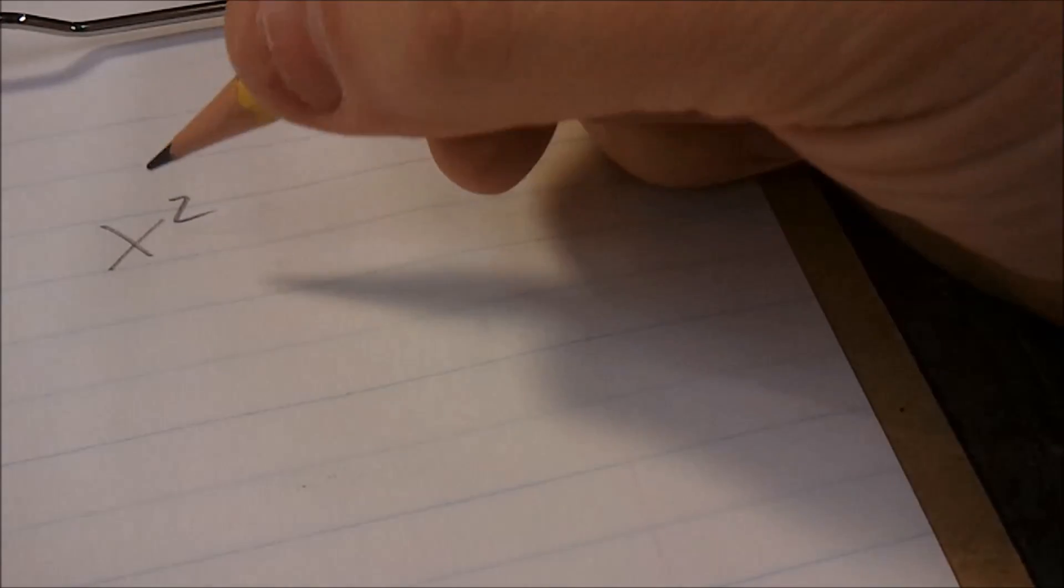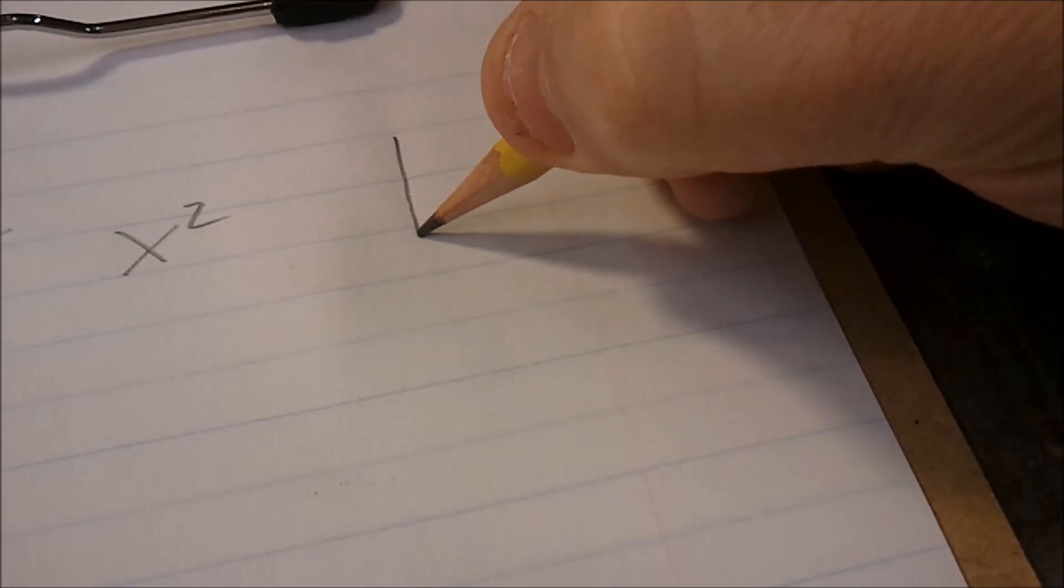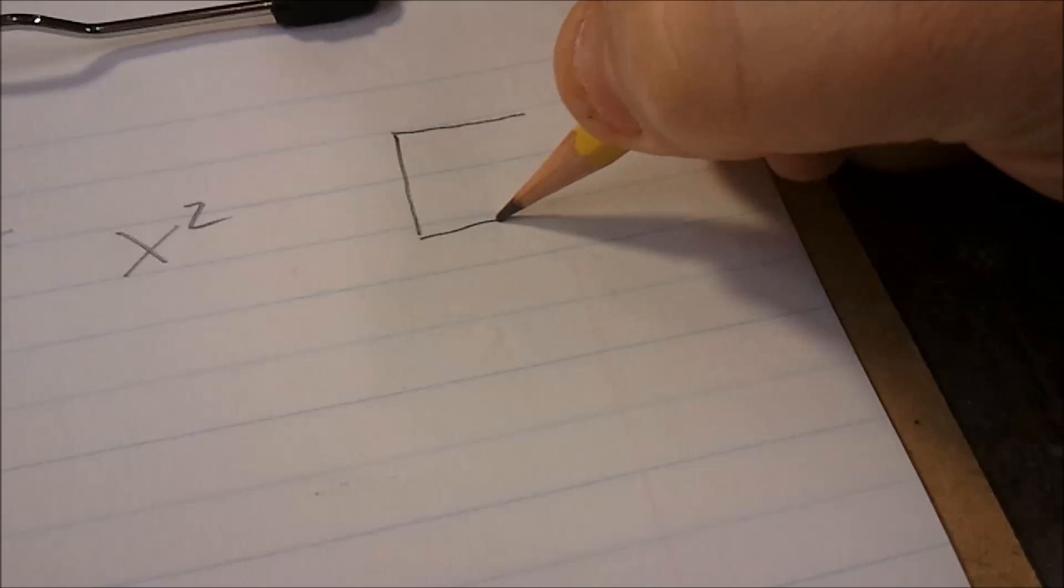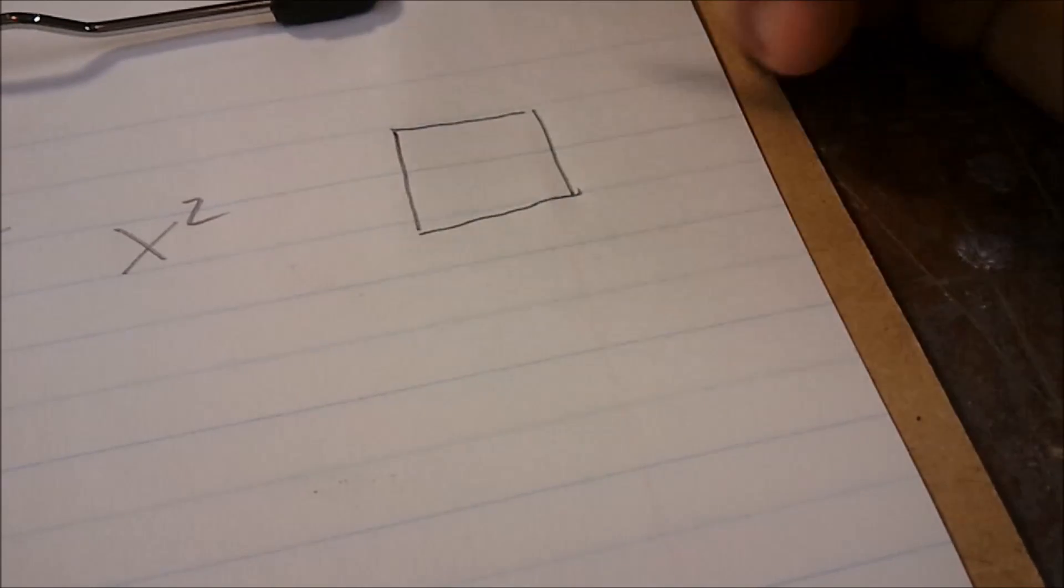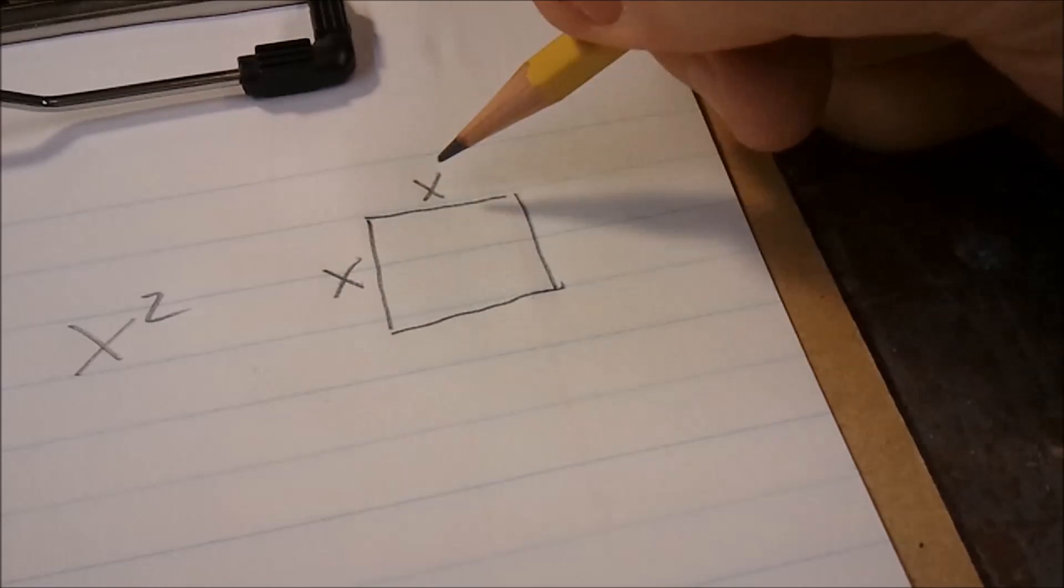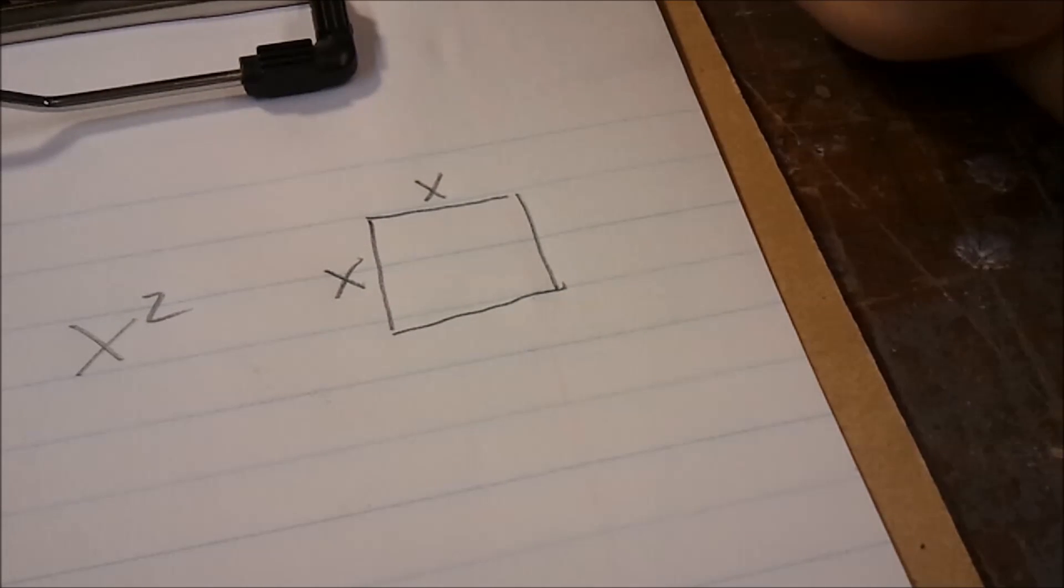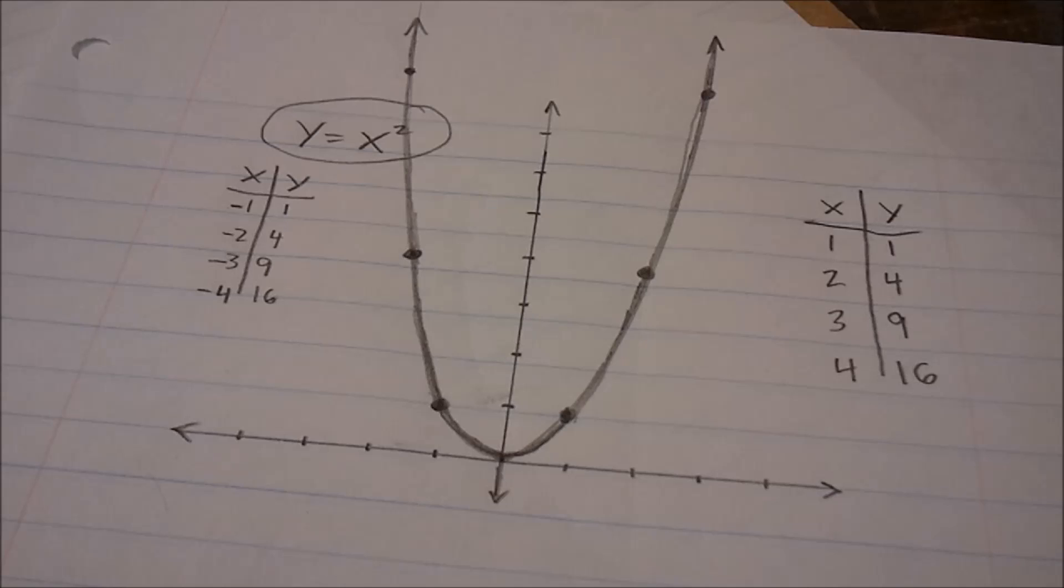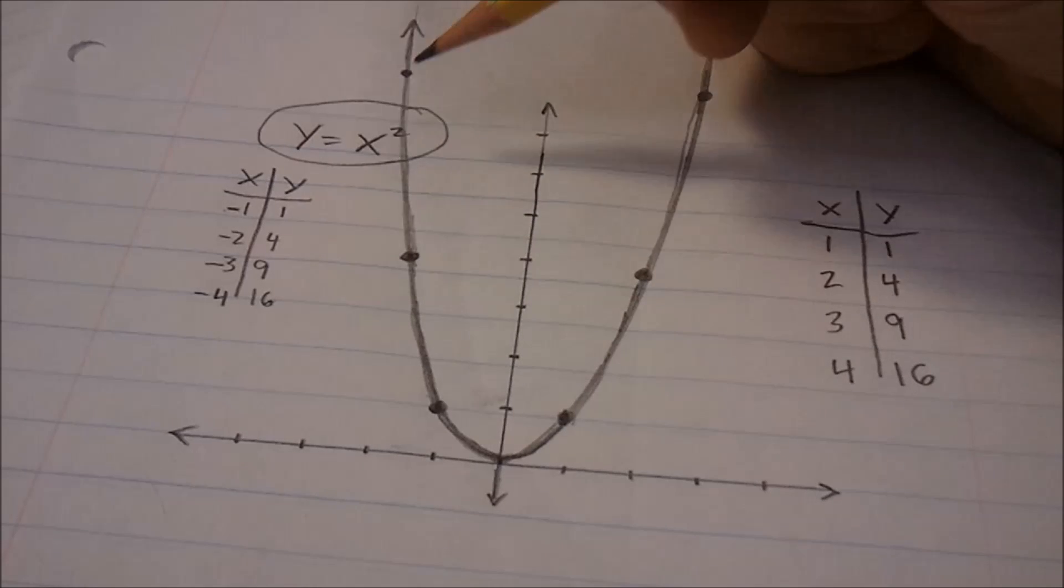Sometimes in algebra you'll hear this referred to as a quadratic equation, and that comes from the Latin prefix quad, which means square. And it means square because it's describing a situation where it's x times x, or x squared. So really the most basic equation for a parabola is y equals x squared, and this is called a quadratic function.